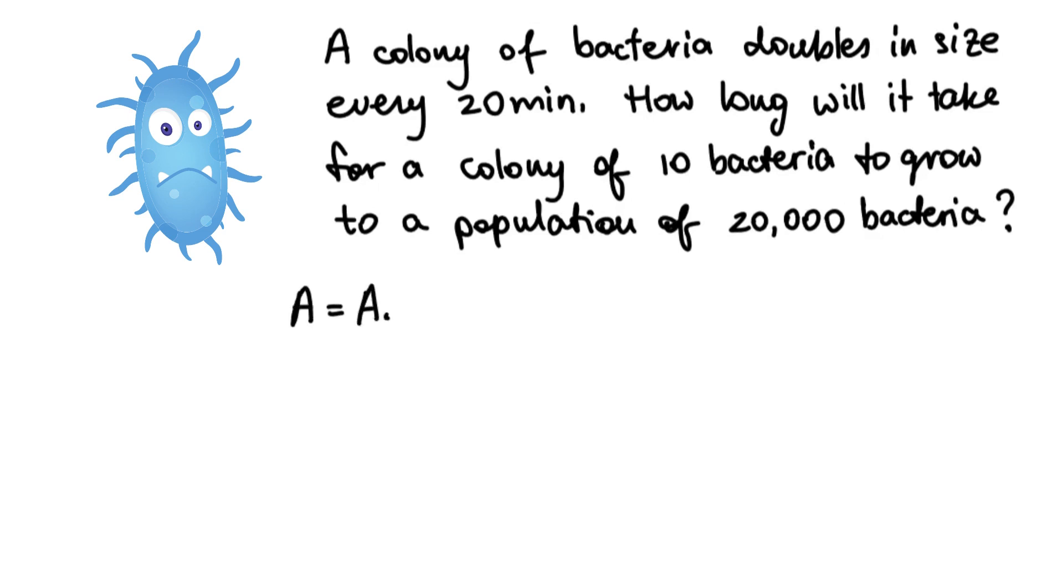We use the formula for the doubling period, A equals A₀ times 2 to the power of t over d. Let's determine what we know. We know the doubling period is 20 minutes. We also know the initial amount, A₀, is 10 bacteria. We know the final amount, A, is 20,000. And our goal is to determine the time it takes.